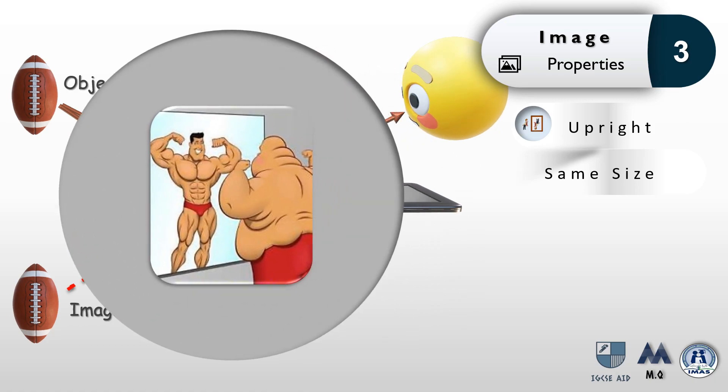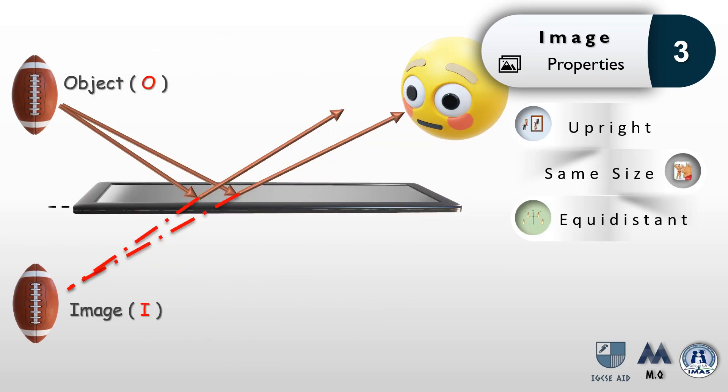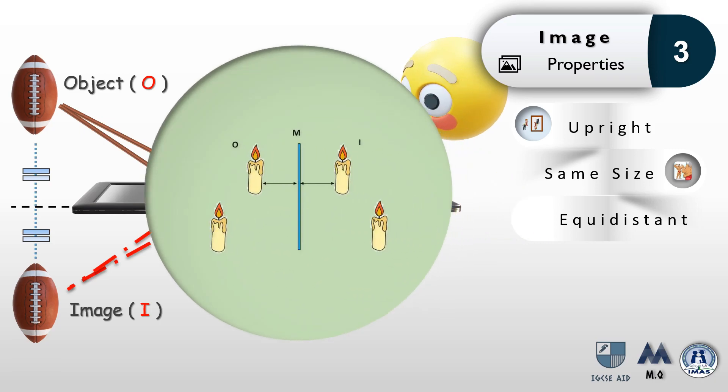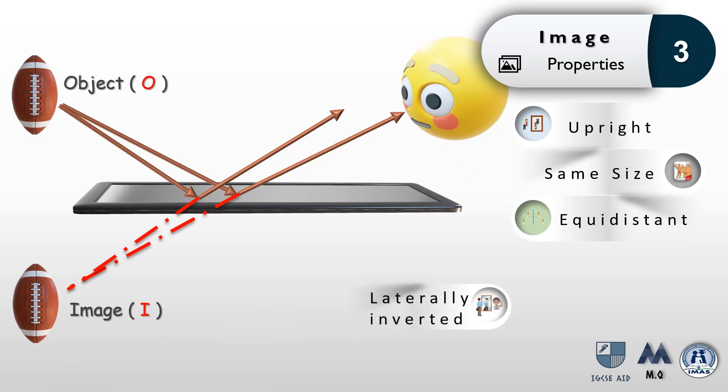Another property is that the object and the image are equidistant from the surface of the mirror, as shown. The further you go from the surface of the mirror, the further your image goes in the opposite direction.